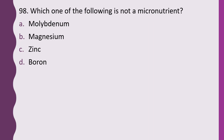Question 98. Which one of the following is not a micronutrient? Molybdenum, magnesium, zinc, or boron. The correct answer is option B — magnesium is not a micronutrient.